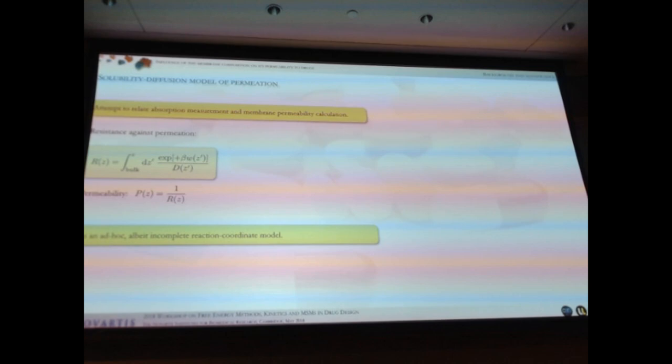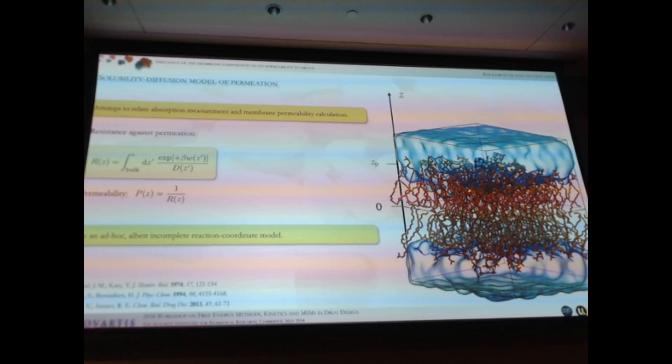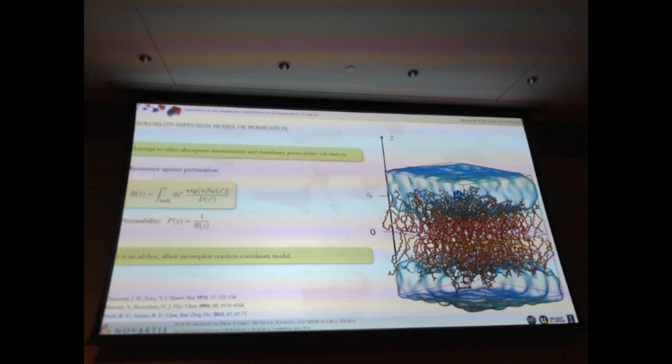And though pharmacokinetics has become a lesser contender in the field to battle lower drug attrition, predicting permeability and bioavailability as upstream as possible in lead discovery remains in principle of importance in the pharma industry. So how do we approach this problem? We basically rely on the solubility diffusion model of permeation, which was proposed back in 1994 by Marenk and Berenson. The idea is to calculate the resistance against permeation.